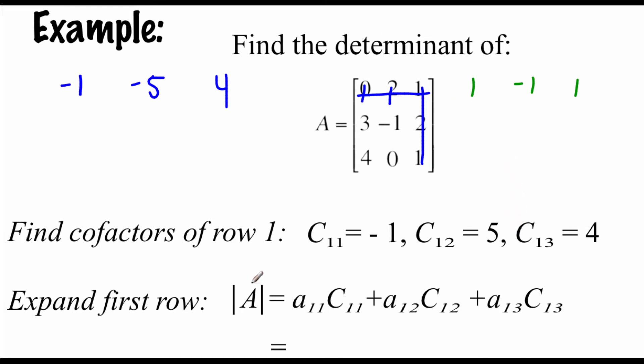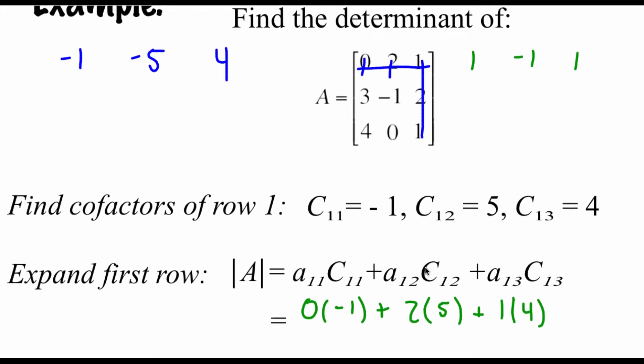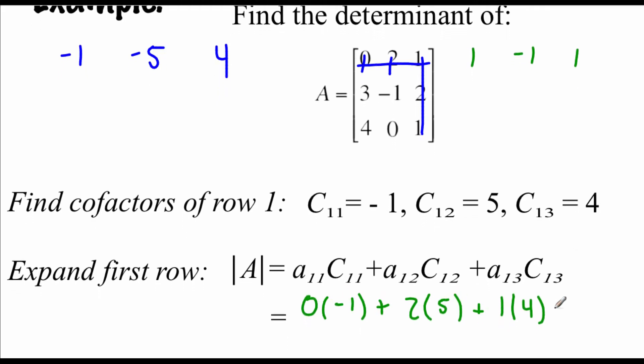So now what we're going to do in order to find the determinant of this matrix A is we're going to take each entry times its cofactor. In the A11 spot, we've got 0, and we're going to multiply that by our negative 1 cofactor, plus in the A12 spot, we've got 2, and the cofactor there is 5. And in the last entry there, we've got 1, and the cofactor we got there was 4. So now multiplying and adding, 0 times negative 1 is 0, plus 10, plus 4, we get 14 as the determinant of this matrix.